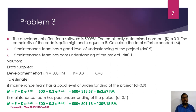To solve this problem, the data supplied: development effort P is 500 person months, empirical constant K is 0.3, and C is 8. To estimate total effort when D is 0.8: M equals P plus K into e raised to (C minus D), which is 500 plus 0.3 into e raised to (8 minus 0.8), equal to 500 plus 0.3 into e raised to 7.1, which equals 500 plus 363.59, giving 863.59 person months.